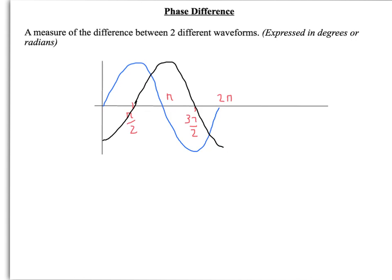The next and final definition you need to know is about phase difference. This is a measure of the difference between two different waveforms. The waveforms will be going at the same frequency or have the same wavelength, but they'll be out of phase with each other. If you look at this diagram here, we've got one waveform, the blue here, and we've got one waveform, the black. We can see here that the blue wave goes through pi over two.